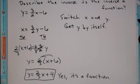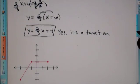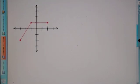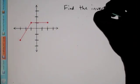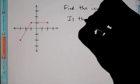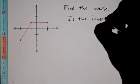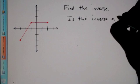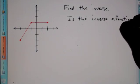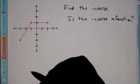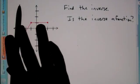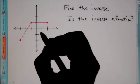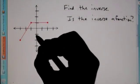Now the next type of problem you're going to see is a graph. Here we have a graph and you're asked to find the inverse and determine whether the inverse is a function. This graph passes the vertical line test. What I want to do when given a graph is actually think about the coordinates.